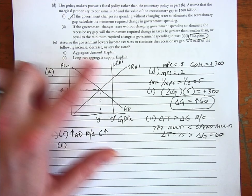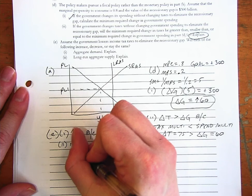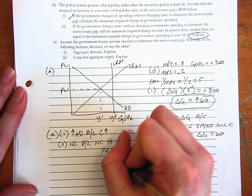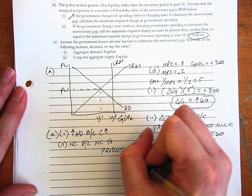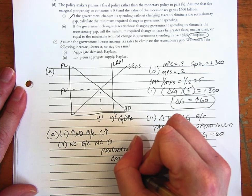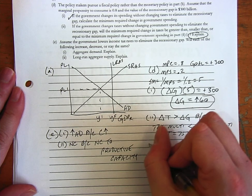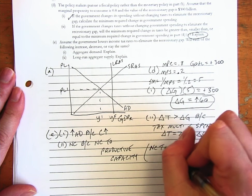And what about LRAS explained? There's no change to that one because there's no change to the productive capacity of the economy. A tax cut simply is not going to change the capacity of our factories.